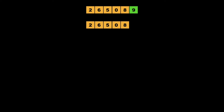Again we choose 2 as a pivot and then insert it at its correct location. So we get our left partition as 0 and right partition as 6, 5, 8. Again we choose 0 as a pivot. Since 0 is already at its correct location, we move further and choose the next pivot which is 6, and then insert 6 at its correct location, partitioning the array into 5 and 8.